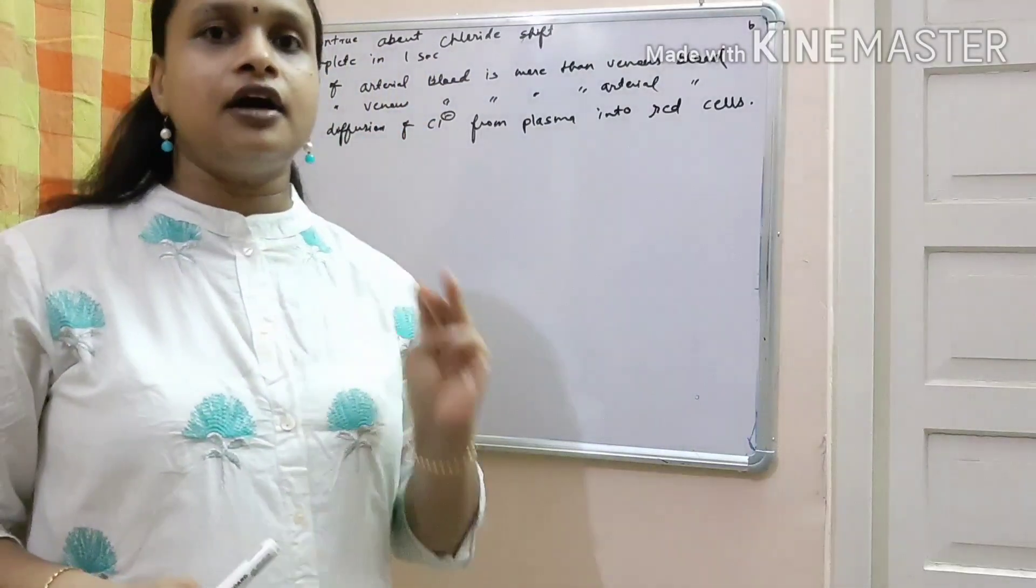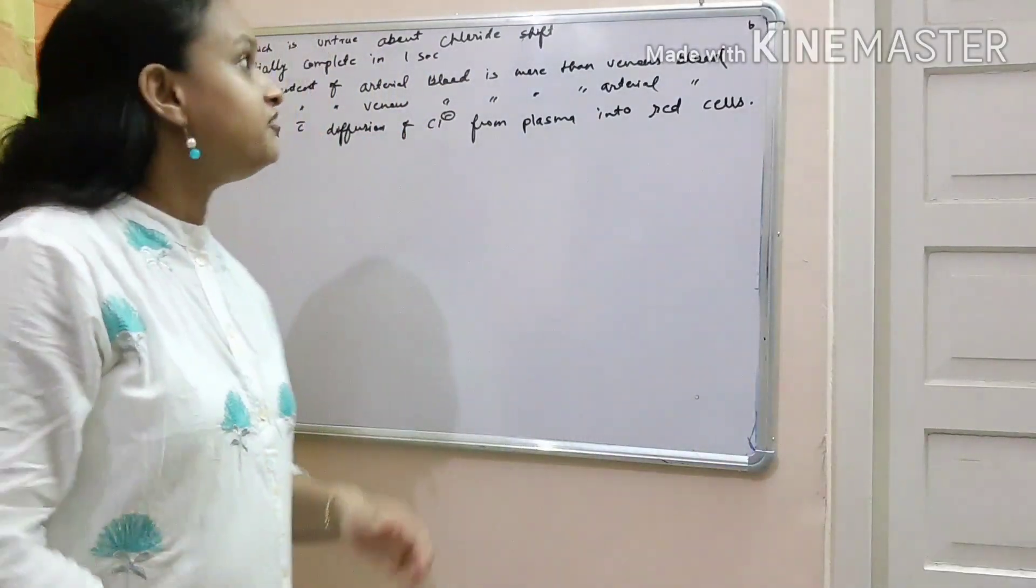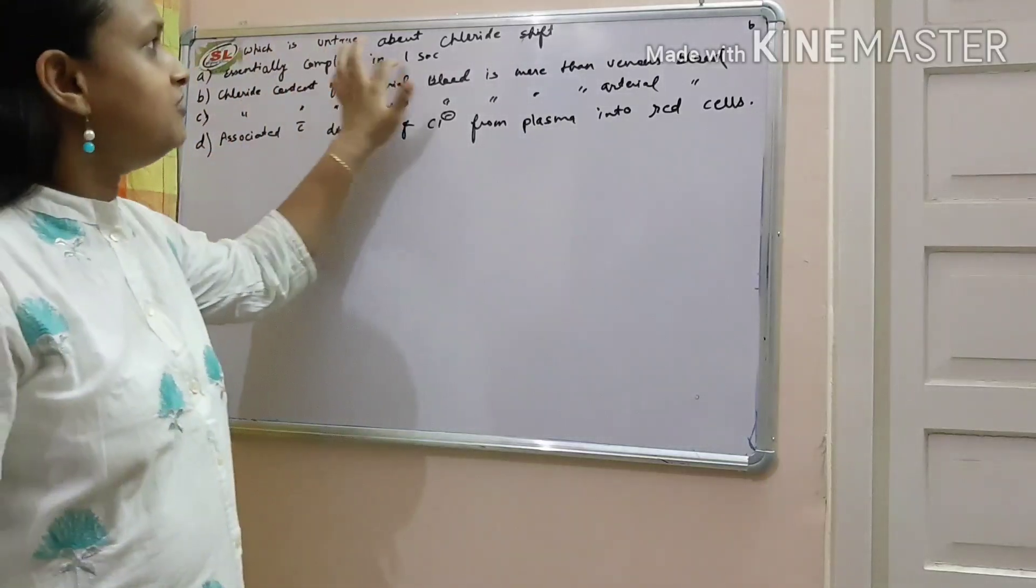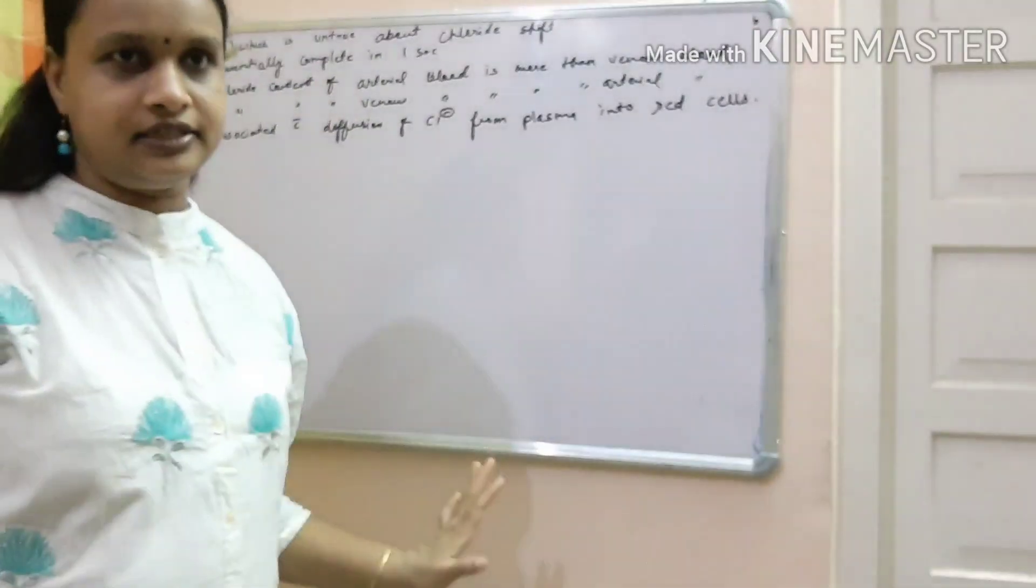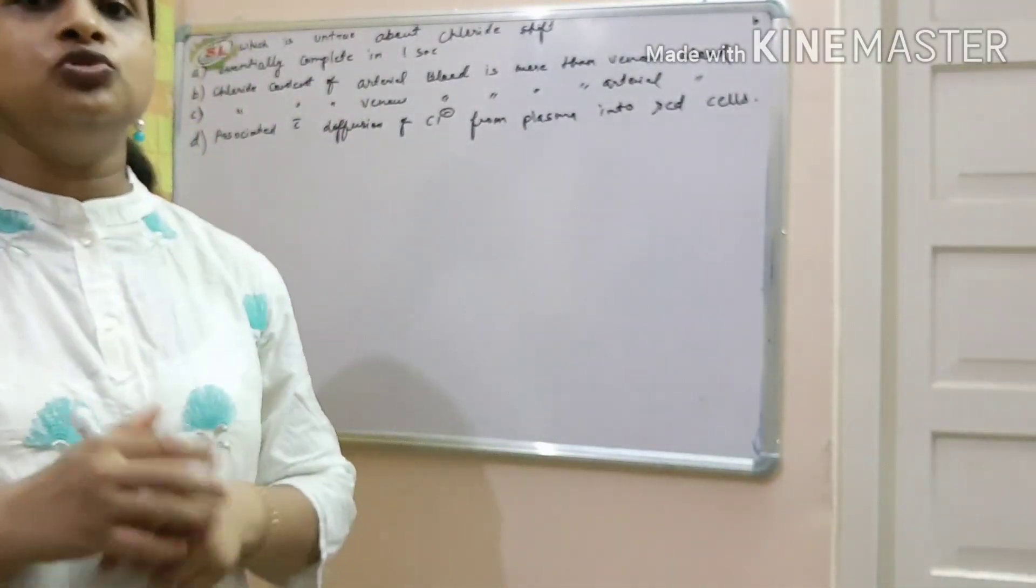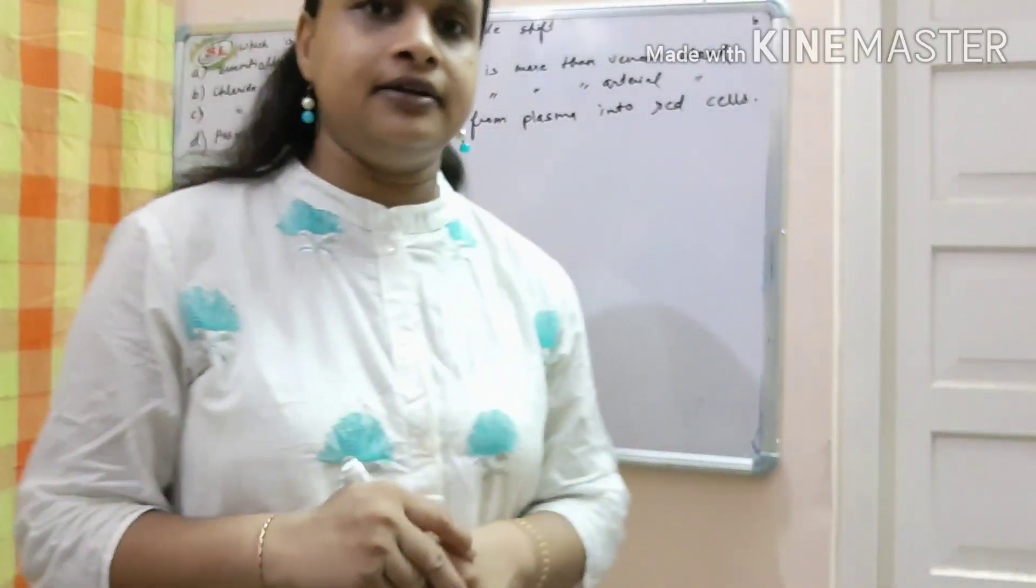So 3 are true options. Number 1, essentially complete in 1 second is absolutely right. Now we will come to the chloride shift in the blood.